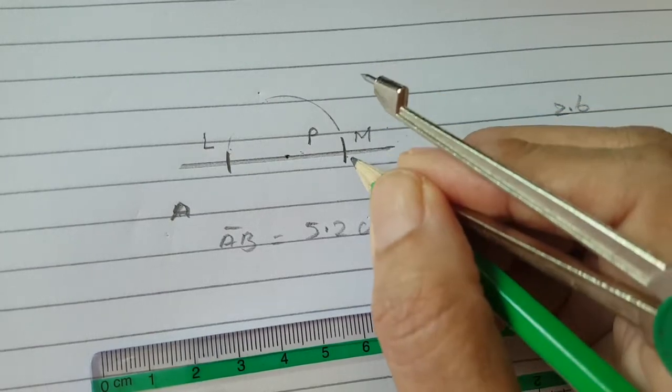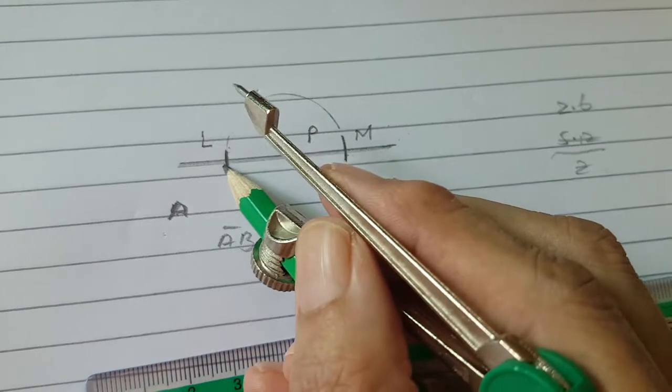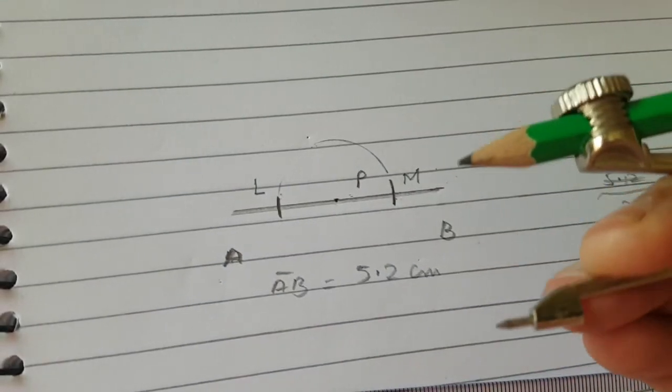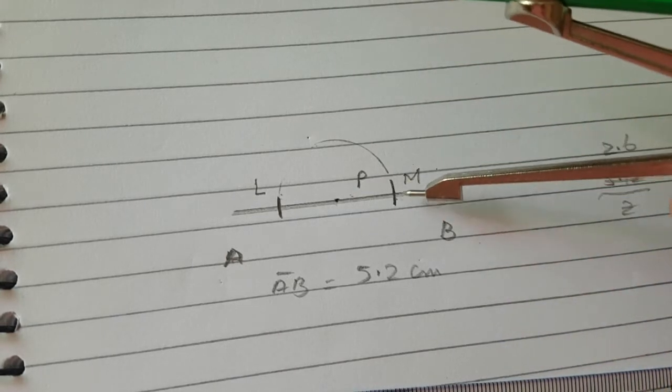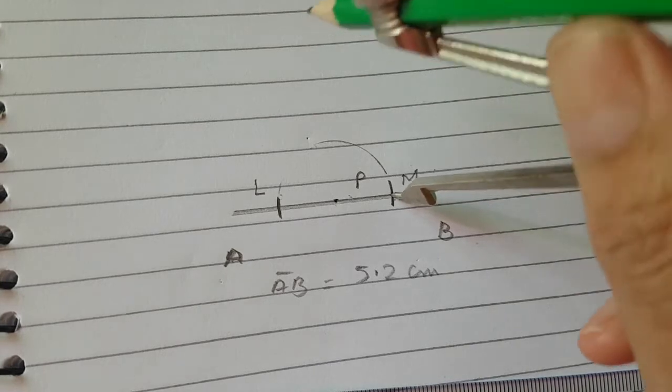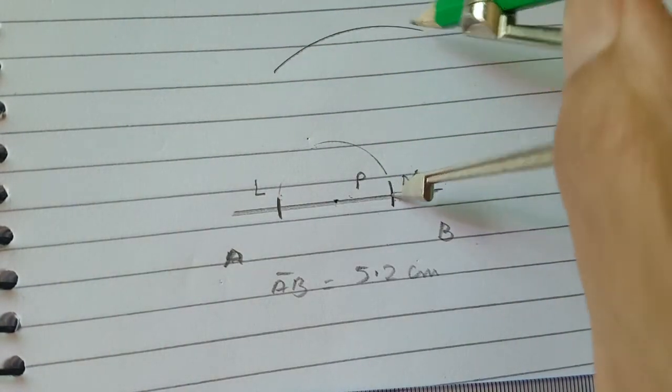These are the points having equal length from the middle. Now you will open your compass at some other suitable radius, and taking M as your center, mark an arc on the line.